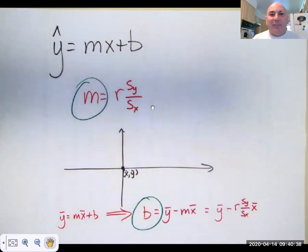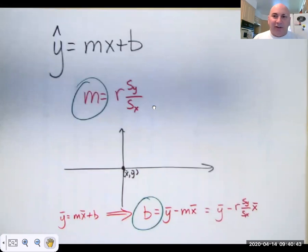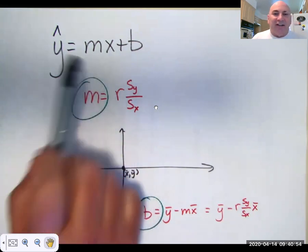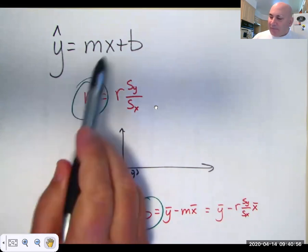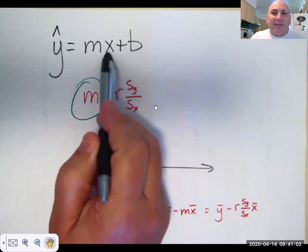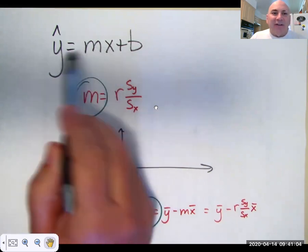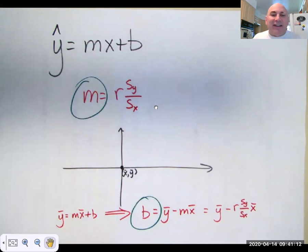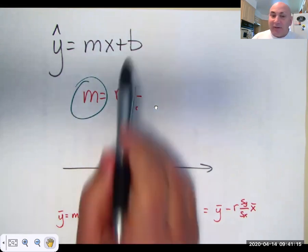Another very interesting aspect of the least squares regression line is it will always always always go through the point x bar y bar. The point x bar y bar is always always always on this line. In other words if you have an equation for your regression line if you substitute x bar into it the equation will predict y bar.